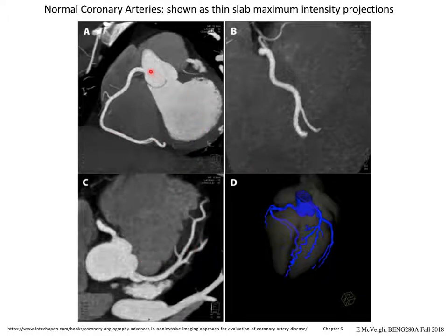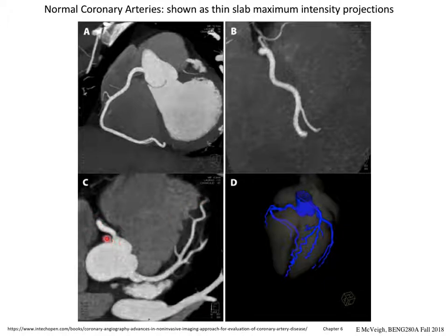Right coronary artery is here. Here's the left main coming off here. This is the LAD going down the central front groove of the heart. This is the right coronary artery coming off of the right cusp of the aorta.